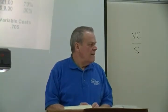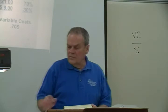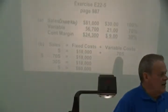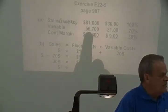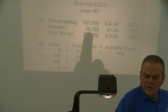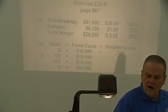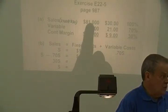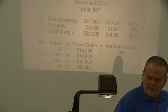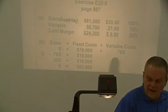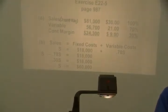Variable costs in the formula are stated as 70% of S — an unknown — not the actual $56,700 we calculated at the $81,000 sales level. If sales vary, variable costs vary proportionally. That's how they get their name. I'll now show an alternative approach.